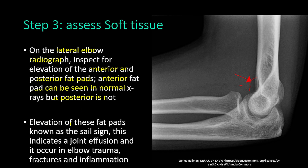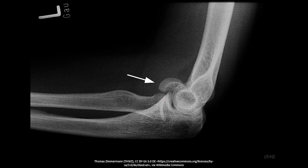The fat pads are only seen on lateral elbow x-rays. Elevation of these fat pads is known as the sail sign and indicates a joint effusion. This occurs in elbow trauma, fractures, and inflammation — in these conditions the elbow joint bleeds, fluid collects, and pushes the fat pads away from the joint, causing their elevation.